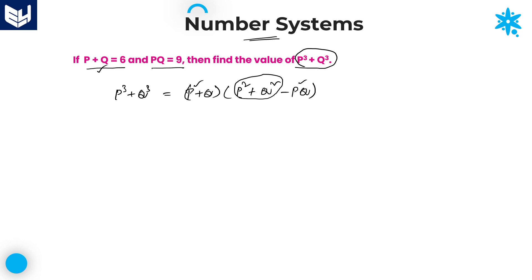So first, what we have to do is we need to calculate the value of p square plus q square. Once we get the value of p square plus q square, we can substitute that value in this expression and get the value of p cube plus q cube. Now, how to calculate p square plus q square — which is derived from p plus q whole square. p plus q whole square is equal to p square plus q square plus 2pq.